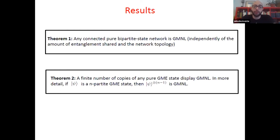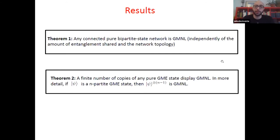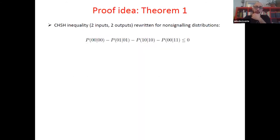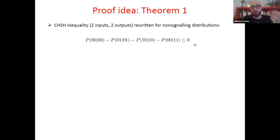I'd like to share the ideas behind the proofs of these two results. For Theorem 1 we need to show that any connected network of pure bipartite states displays genuine multipartite non-locality. The idea uses a couple of different ingredients: the CHSH inequality (with two parties, two inputs, two outputs) rewritten using the non-signaling condition, and Hardy's paradox.